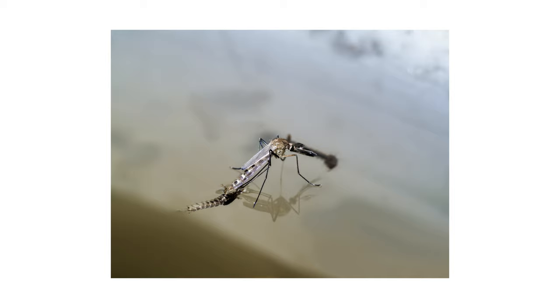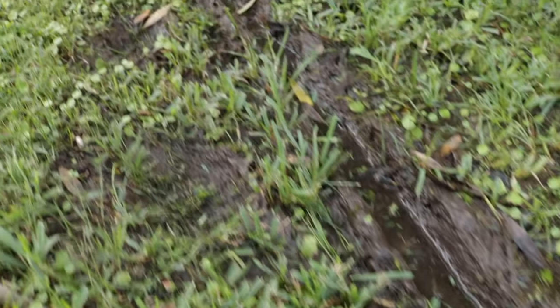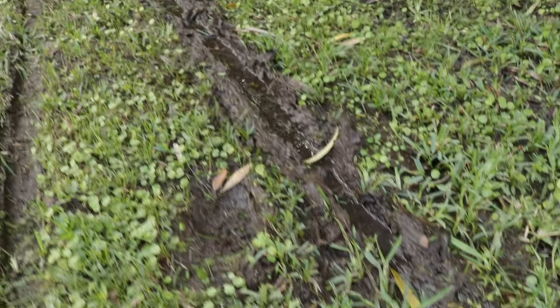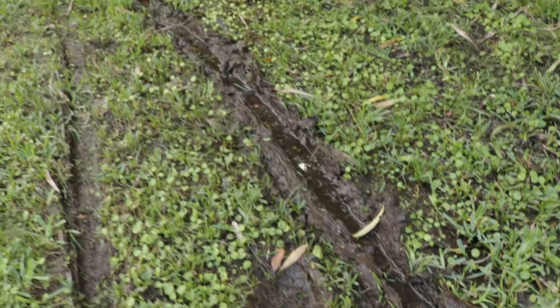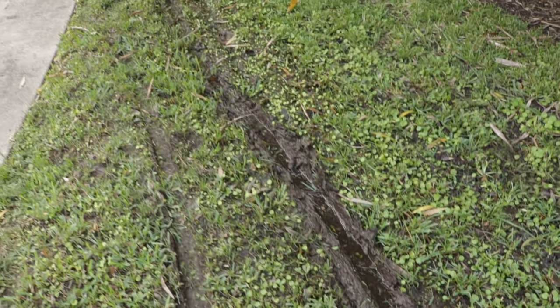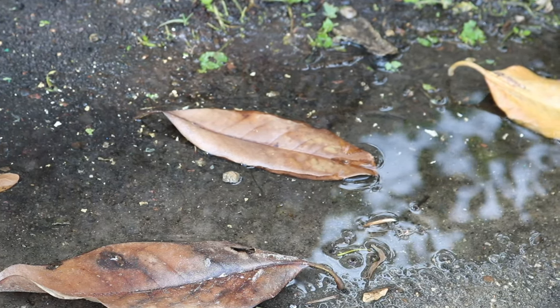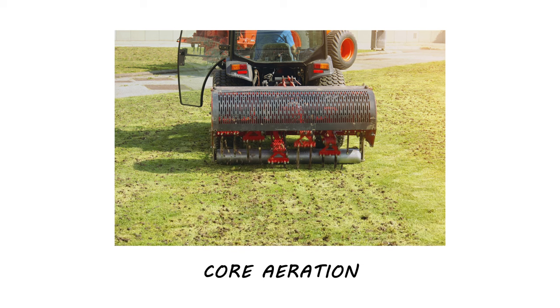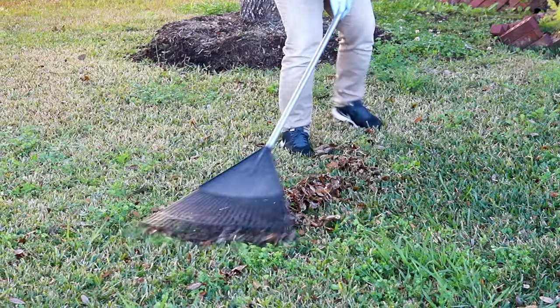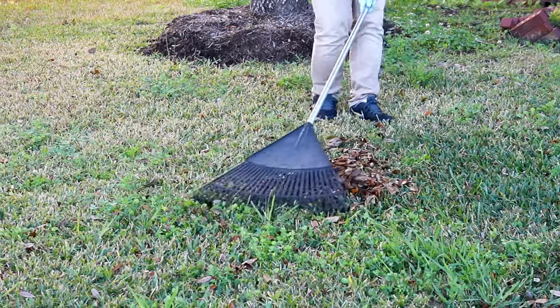The best way to stop mosquitoes from breeding on your property is to address any excess moisture and remove sources of standing water. Mosquitoes need still water in order to breed. If your lawn often pools water after rain, there are several ways you can improve its drainage. Core aeration removes plugs of soil, increasing airflow and allowing more water to seep deeper into the earth.